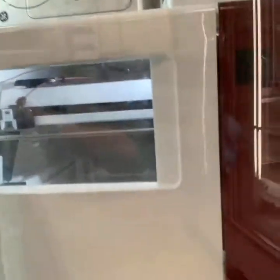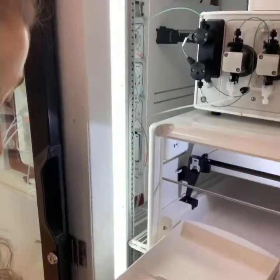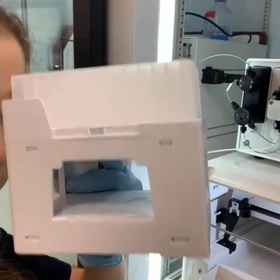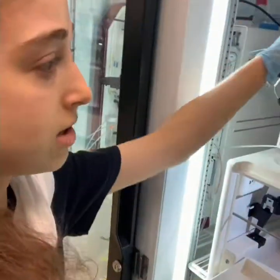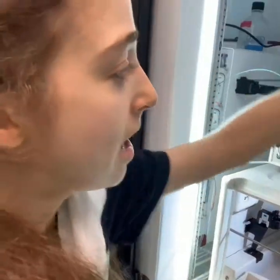So when it's coming out of the column, it's sent through into this fraction collector. And so the fraction collector has this tray and it has these different inserts you can put in. So I used this 96 well block, a deep well block, because I wanted small fractions. But if I want bigger fractions I can use the tubes.